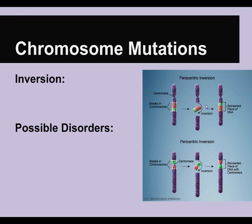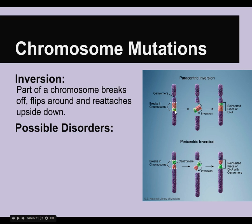Another chromosome mutation is called inversion. This is where part of the chromosome breaks off, turns around, and reattaches. You can see in the picture here, there's a pink part of the chromosome and a green part. In an inversion, it breaks, turns around, and reattaches upside down. It can happen in one of the chromatids or it can happen around the centromere as well. You just need to know that it's when the piece of DNA flips around and reattaches upside down.